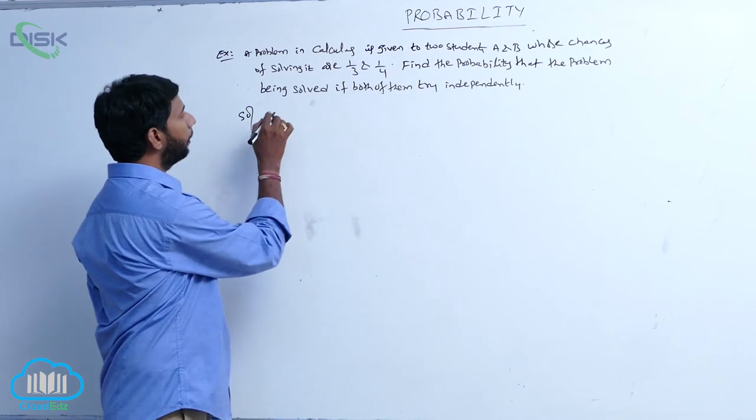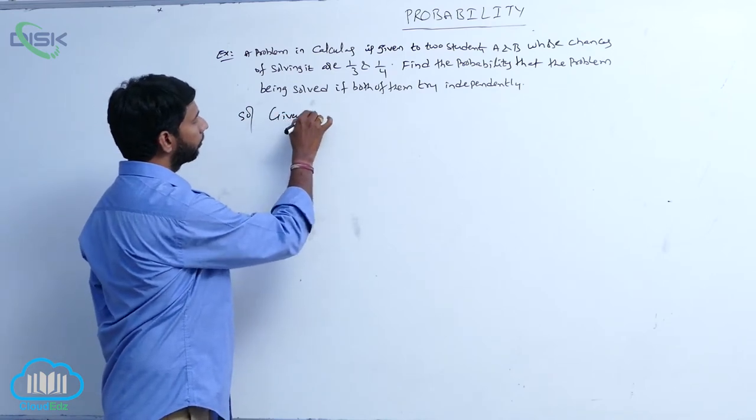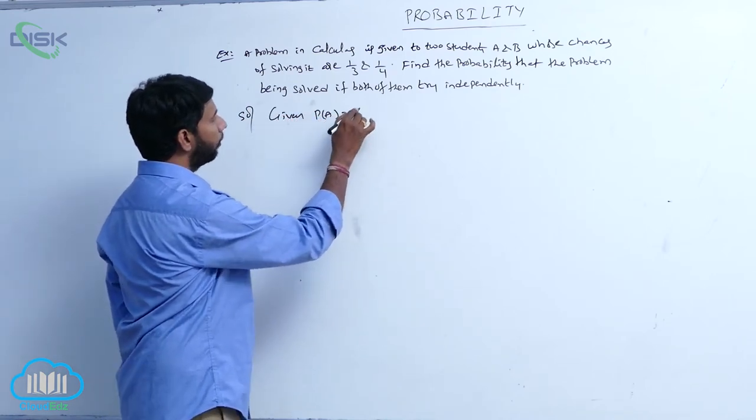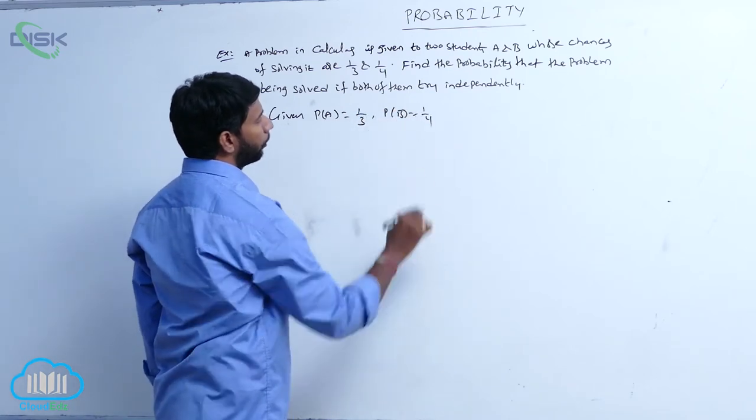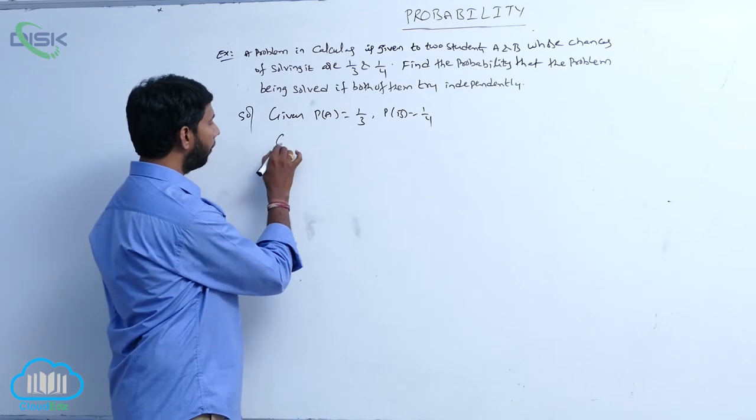If both of them try independently, given P of A is equal to 1 by 3, comma P of B is equal to 1 by 4. So, given A, B are independent.